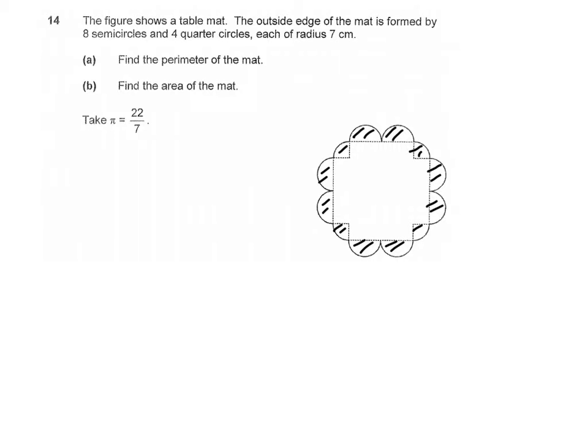Okay, as discussed earlier, all the semicircles and the quarter circles, they all add up to 5 complete circles. So that will be 5 circles.